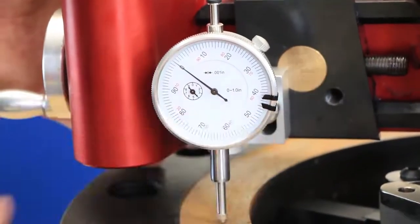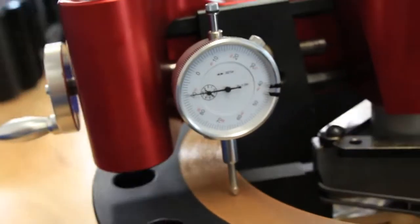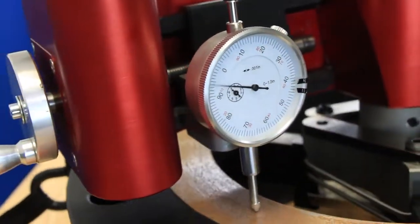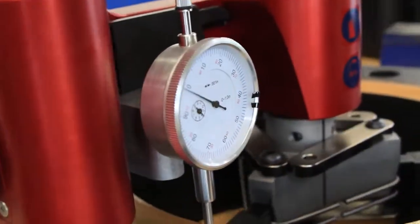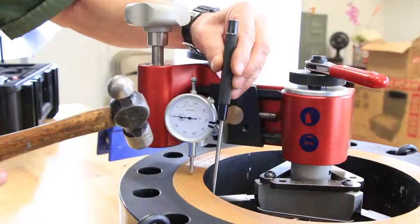Once mounted, rotate the tool to find the low and high points and set the dial indicator to zero at the most positive reading. In this example, the tool position over one side of the flange is about ten thousandths of an inch off. As you can see, the indicator reading at this point is negative ten thousandths.